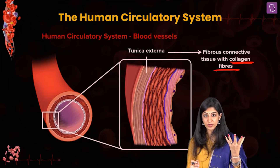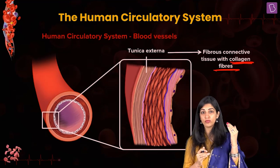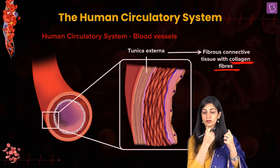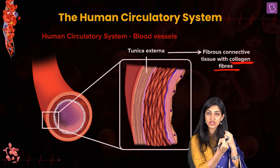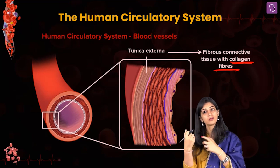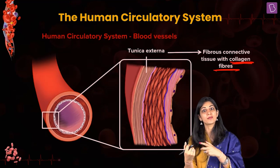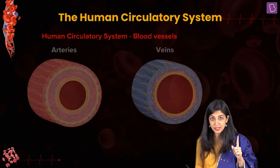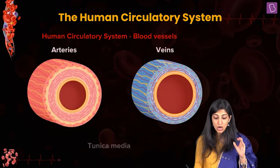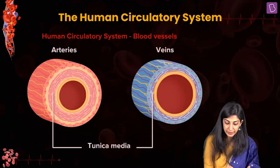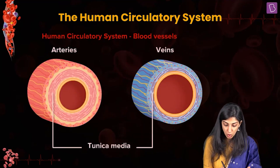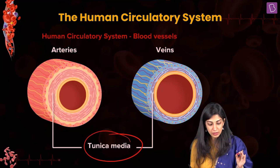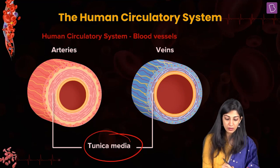So once again, moving from outside to inside: fibrous tissue (tunica externa), elastic tissue and smooth muscle (tunica media), and squamous epithelium (tunica intima). Now, the key difference: the middle layer or tunica media is thicker in an artery.